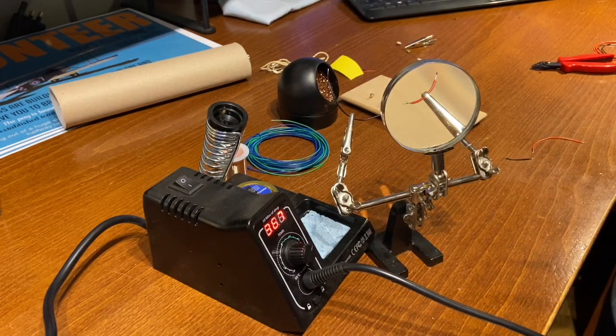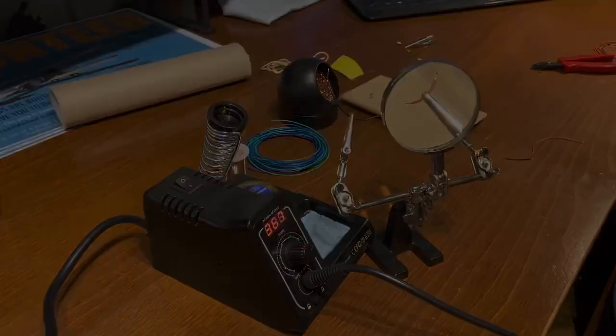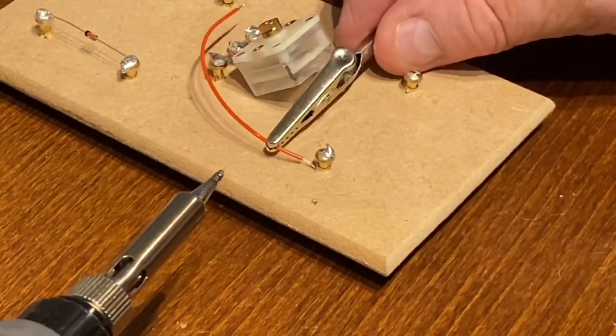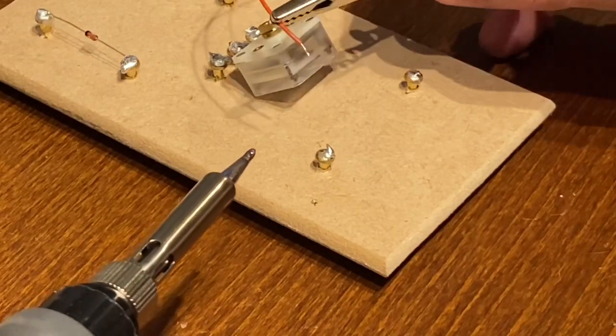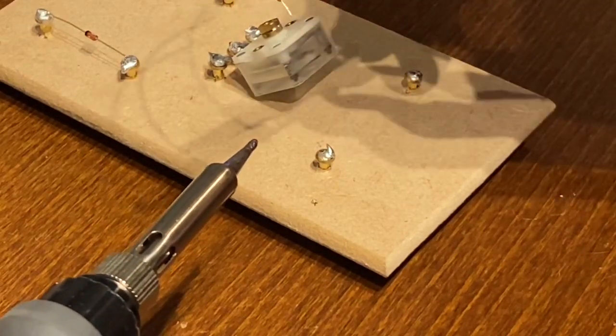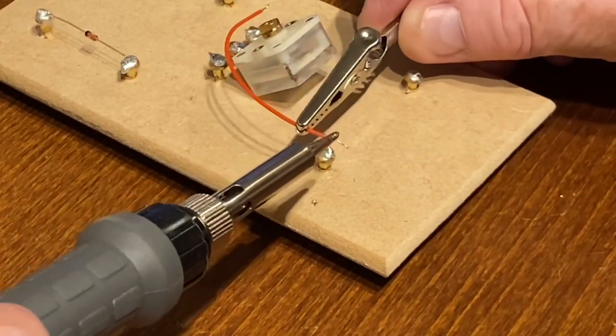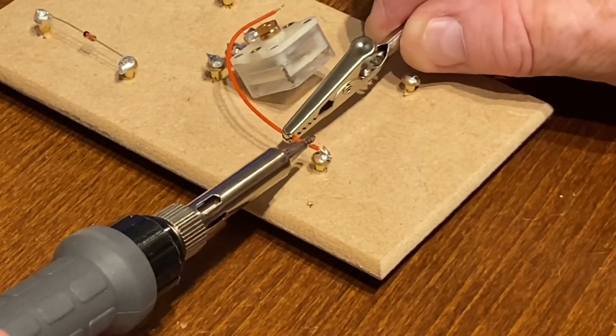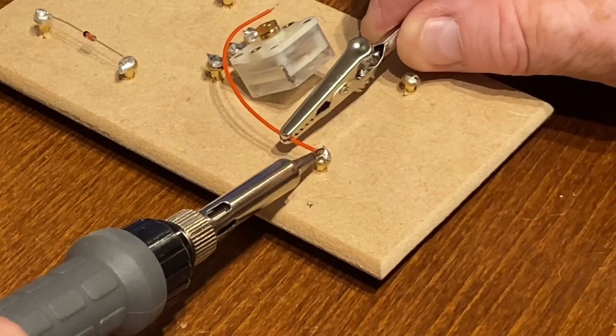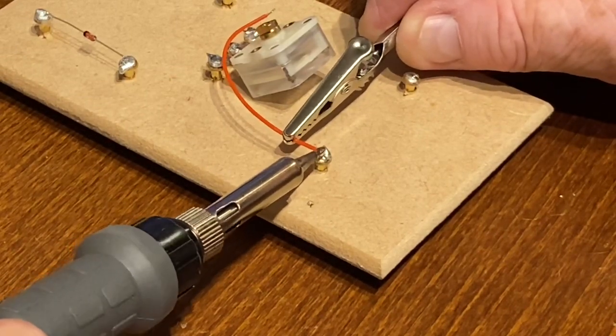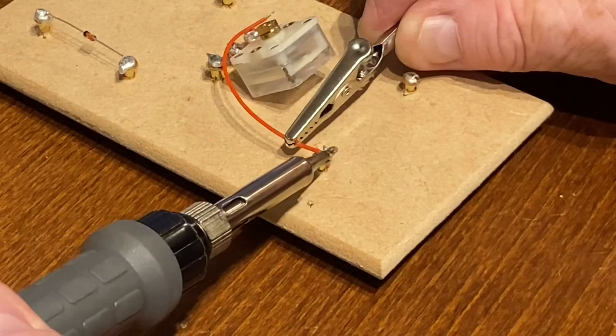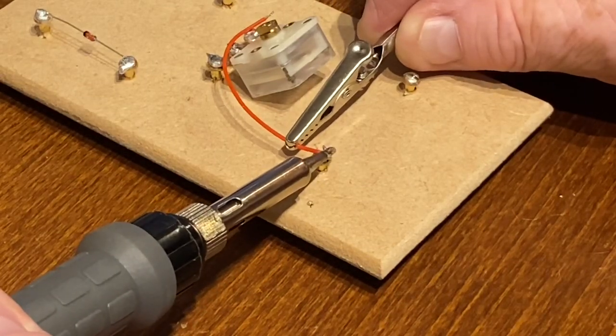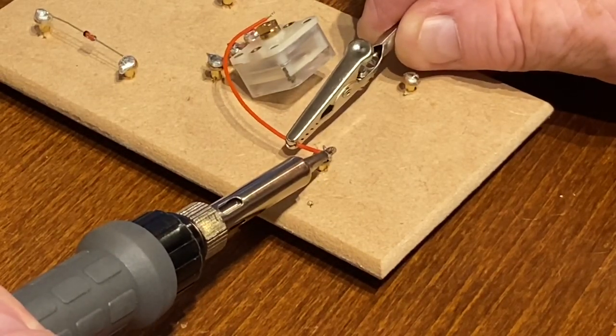That's all the tinning done. So now that both the tip of the wire and the top of the screw have been tinned, the theory is that you should just be able to press the two together and apply some heat from the soldering iron to make it stick.